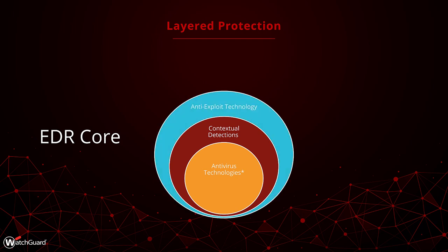Our anti-exploit technologies are the next layer of our protections. Anti-exploit protects the running processes on the endpoints from compromise, helping prevent fileless malware from gaining a foothold on the system. The anti-exploit protection is also able to feed data about running processes back into our contextual detections to amplify their effectiveness.